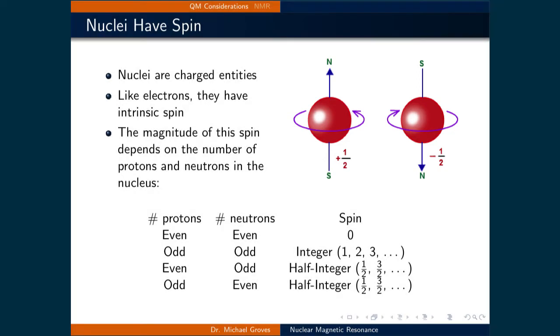The magnitude of this spin depends on the number of protons and neutrons in the nucleus. For example, if the number of protons is even and the number of neutrons is even, then the total amount of intrinsic spin the nucleus has is zero. If the number of protons is odd and the number of neutrons is odd, then the total amount of intrinsic spin the nucleus has will be a positive integer.